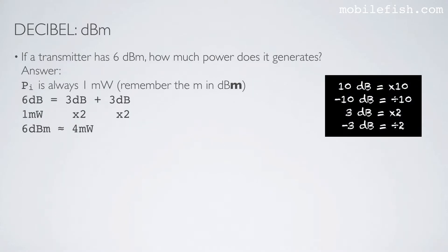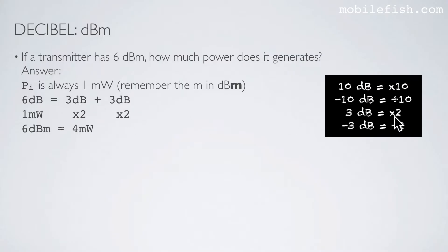If a transmitter has 6 dBm, how much power does it generate? The input power is always 1 milliwatt — the 'm' in dBm. So 6 dB can be written as 3 dB plus 3 dB. We start with 1 milliwatt: 3 dB means multiply by 2, so 1 milliwatt times 2 is 2 milliwatt, times 2 is 4 milliwatt. So 6 dBm is approximately 4 milliwatt.